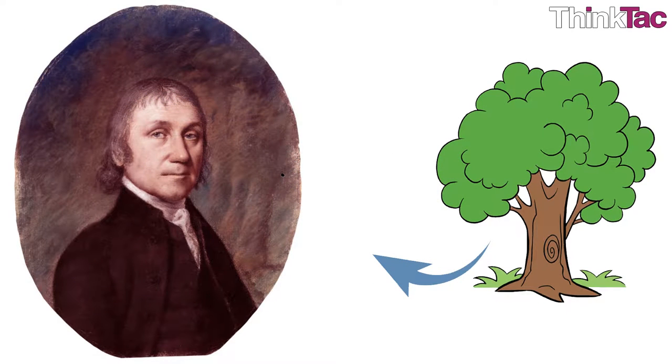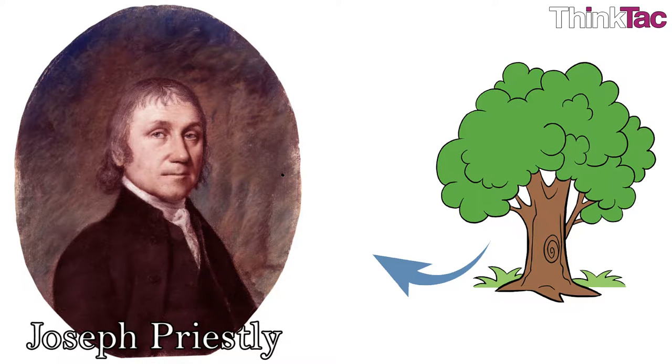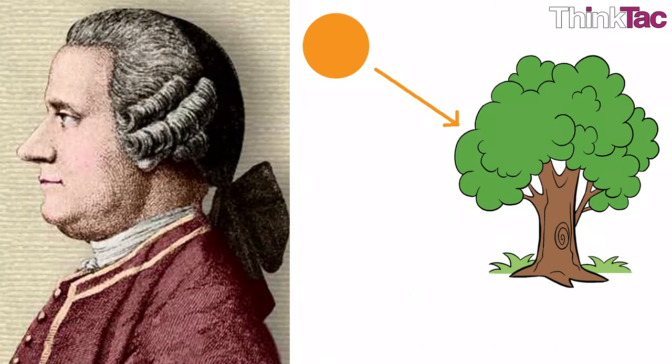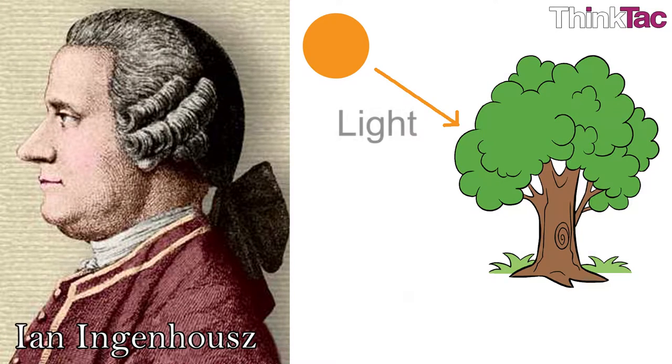In 1780, the famous English chemist Joseph Priestley discovered that plants produce oxygen. After a few years, a Dutch physicist, Ian Ingenhaus, discovered that light plays a major role in photosynthesis.